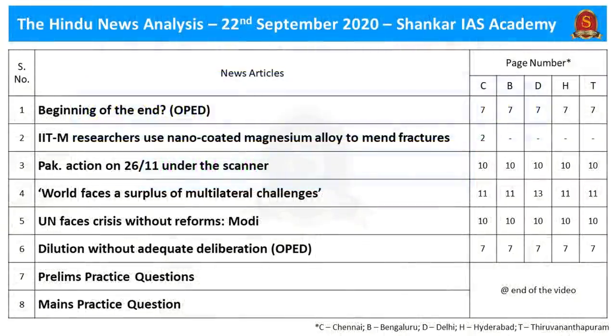These are the list of news articles taken for discussion. They have been given along with the page numbers of different editions. The link for the handwritten notes in PDF format and the timestamping of the discussed articles are provided in the description box and comment section. Now, let's move on to the analysis of the first news article.